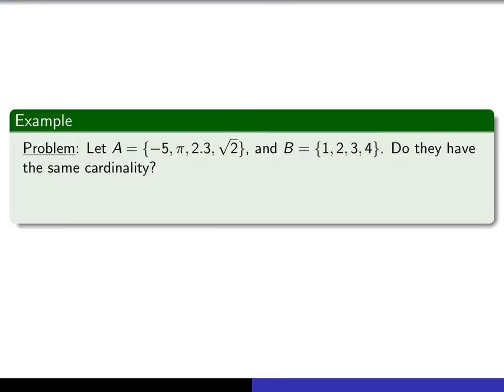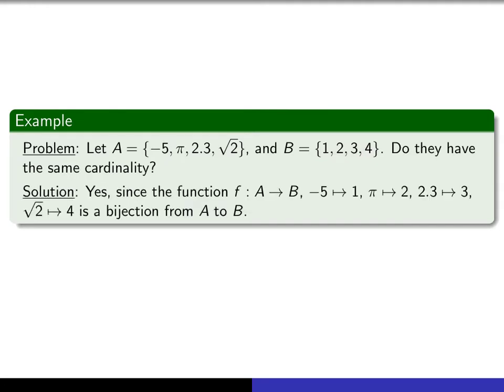So here's a simple example. Consider A to be this set here. It consists of the real numbers minus 5, pi, 2.3, and square root of 2. And B is the set consisting of 1, 2, 3, and 4. Do they have the same cardinality? Well, yes, they do have the same cardinality. Intuitively, it's because they both have exactly four elements.